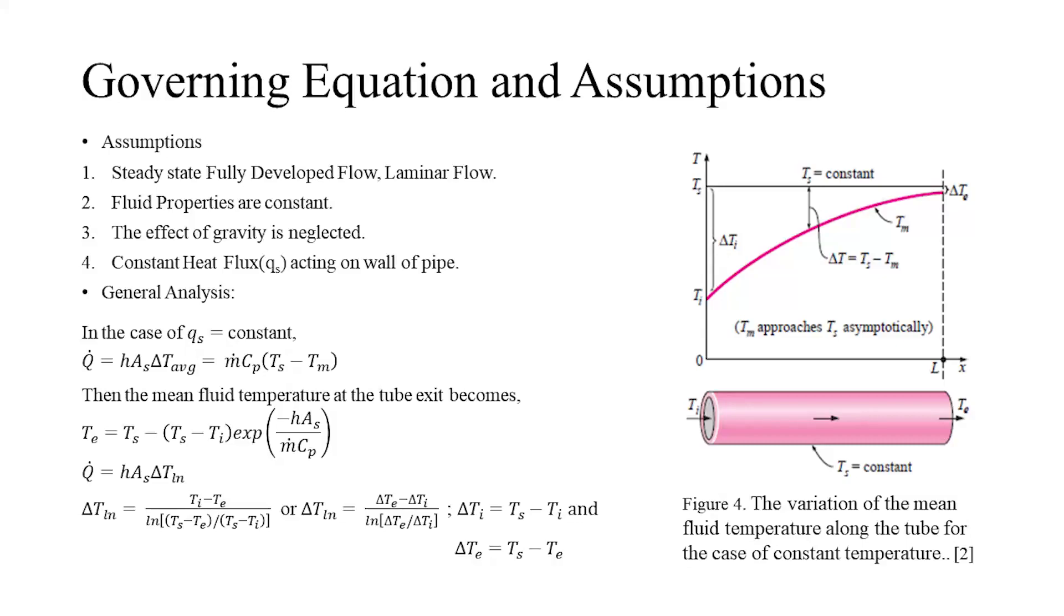We will now have a brief discussion about the governing equations which describe the behavior of flow through a pipe. We have assumed the flow to be steady, fully developed laminar and with its properties being constant. Additionally, the effect of gravity is neglected by conservation of energy equation and symbol rearranging.